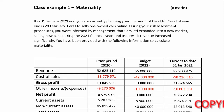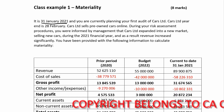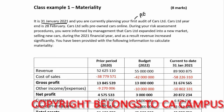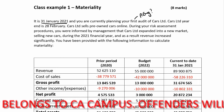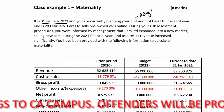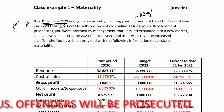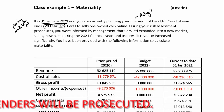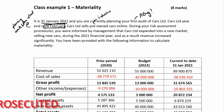Class example one. You had two minutes reading time, so this is what you pick up in the reading time. It is 31 January 2021. You are currently planning your first audit of Cars Limited — first audit for this engagement. Note the question: is it just my first audit, or is it the audit firm's first time auditing Cars? Cars Limited's year end is 28 February. Cars Limited sells pre-owned cars online, so they have IT requirements.